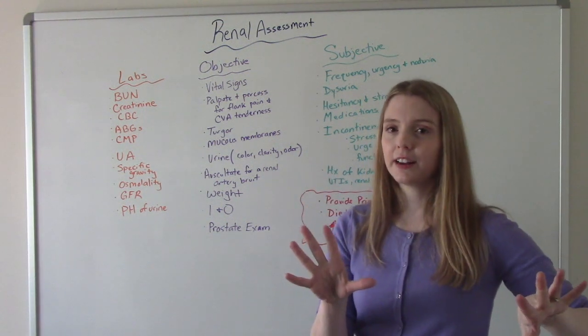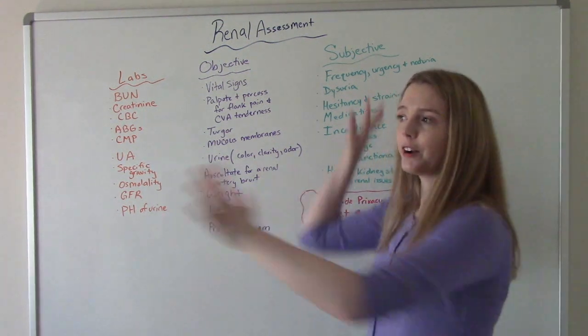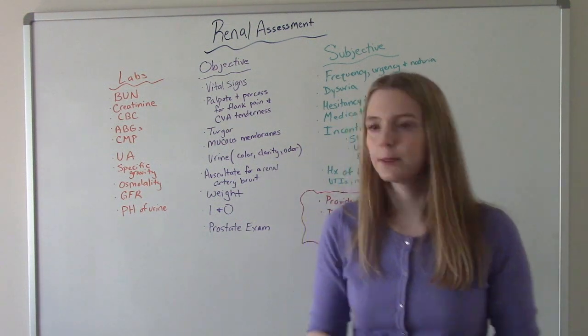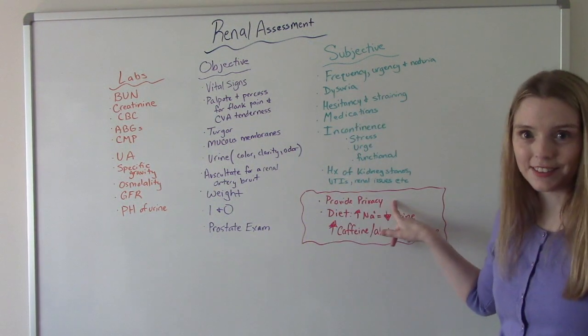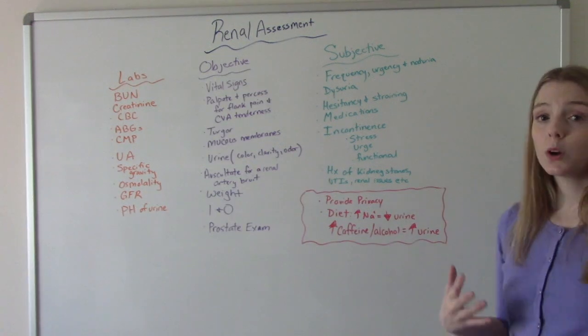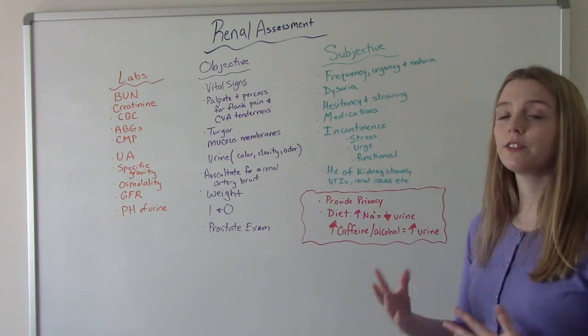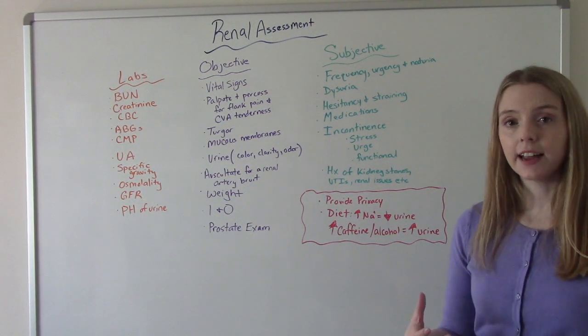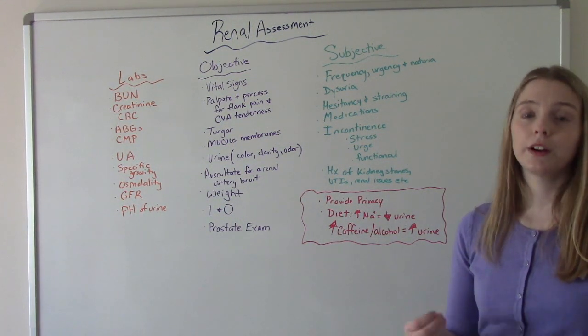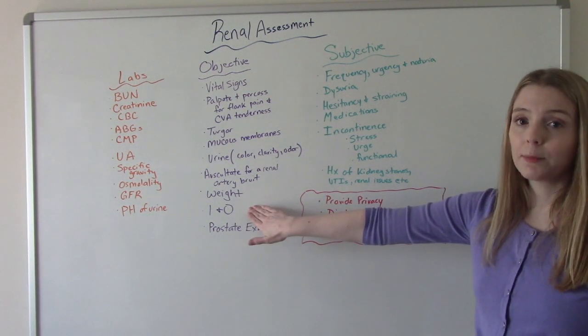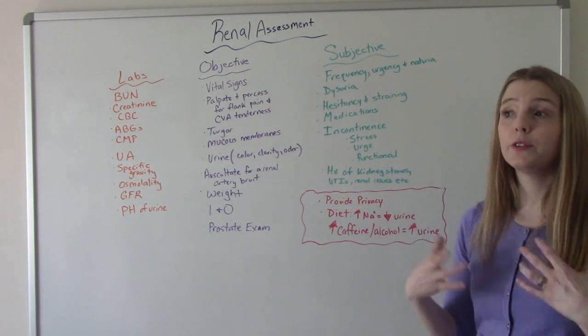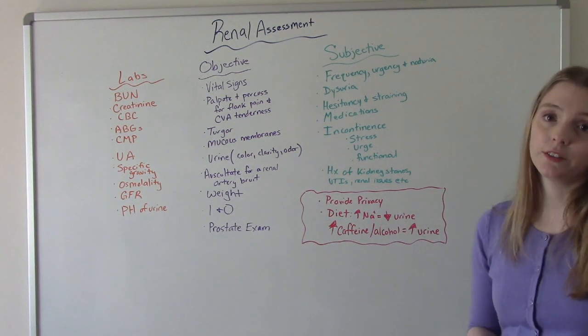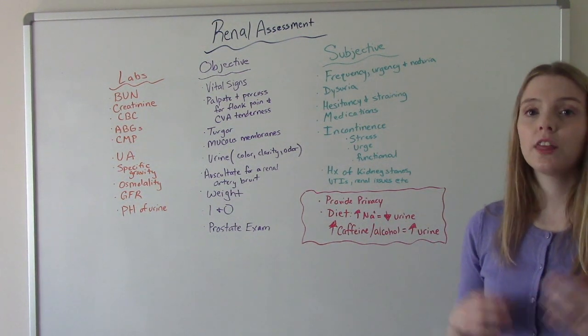And then the final little thing I put on here, not necessarily like part of the assessment, but stuff that you as the nurse need to keep in mind. So of course we want to provide privacy. But then also we want to make sure we have a little bit more information in regards to their diet. If they have a high sodium diet, then they will have lower urine output. So when we're checking our I&O on our patient, if we're noticing their output is a little bit lower, it could be as a result of their diet. So we definitely want to know their diet.